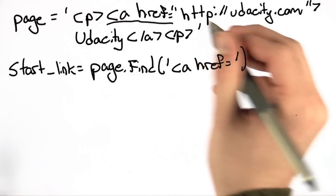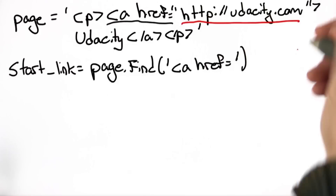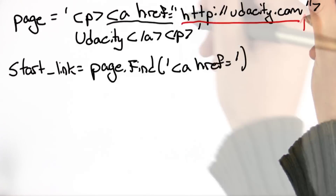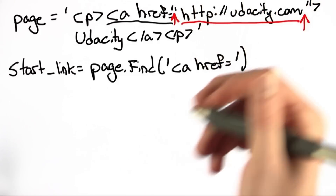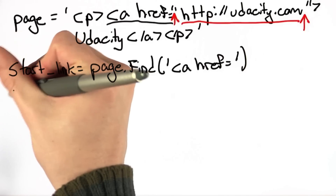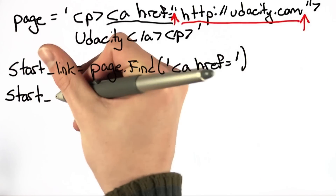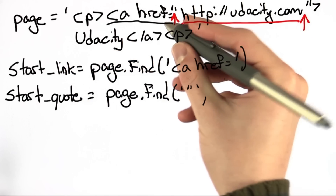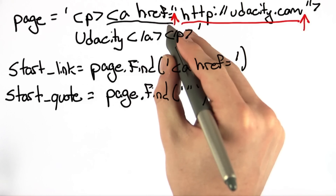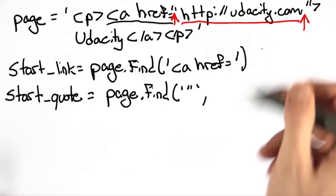If you look closely at what we have here, what we want is the URL, and it's nicely bounded by quotes. So my hint is going to be: find the quotes. I'll get you started by showing you the location of the starting quote. Here it's important to remember we want to start from where the start link was, otherwise we would get quotes unrelated to the hyperlink itself.